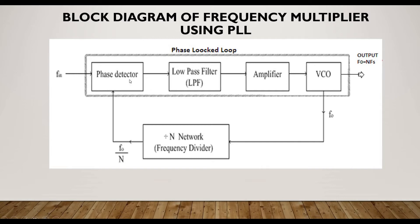The first block is the phase detector, which acts as a comparator. It compares the input frequency F_in and the VCO output frequency F0, producing a DC voltage that is proportional to the phase difference between these two frequencies. The phase detector used in PLL may be of analog or digital type. Most monolithic PLL integrated circuits use the analog phase detector, with the double balanced mixer circuit being one of the most commonly used.